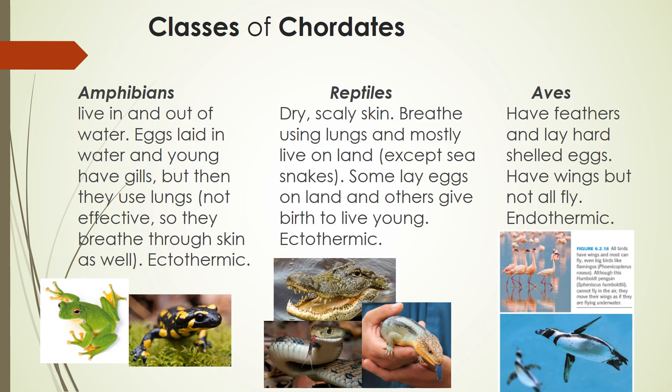Now we're moving into classes you're probably more familiar with. On the left, we have amphibians — these can live in and outside of water. Their eggs are laid in water, and their young have gills, like tadpoles, but then they start using their lungs. Their lungs aren't very effective though, so they also breathe through their skin. Amphibians are ectothermic, meaning they can't regulate their own body temperature and rely on the sun to warm up or shade to cool down. Reptiles are also ectothermic, and have dry, scaly skin. They breathe using their lungs and mostly live on land. Some lay hard-shelled eggs like crocodiles, or soft-shelled eggs like turtles, and some reptiles give birth to live young.